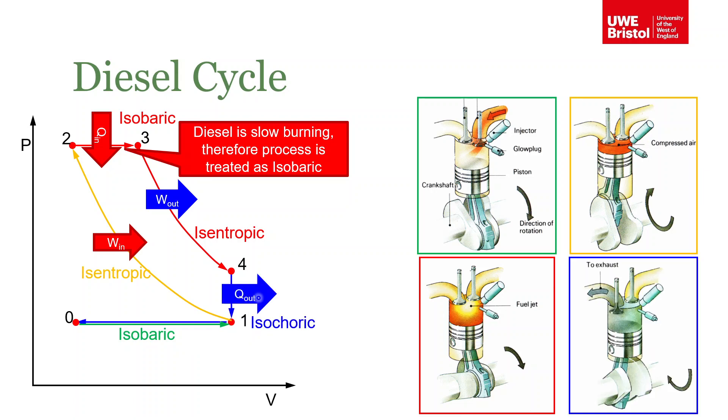Then, in a similar manner to the Otto cycle, we assume that the exhaust valve opens and all the exhaust gas escapes from the cylinder. We assume this happens instantaneously, and so what that equates to is an isochoric heat rejection of heat out of the system.